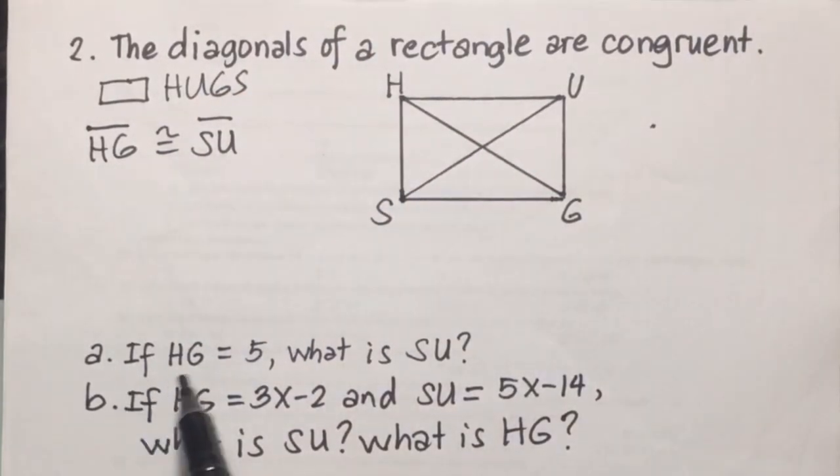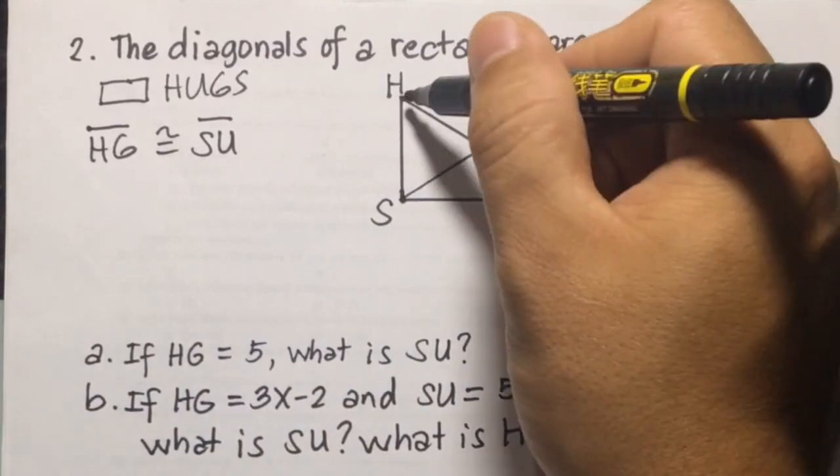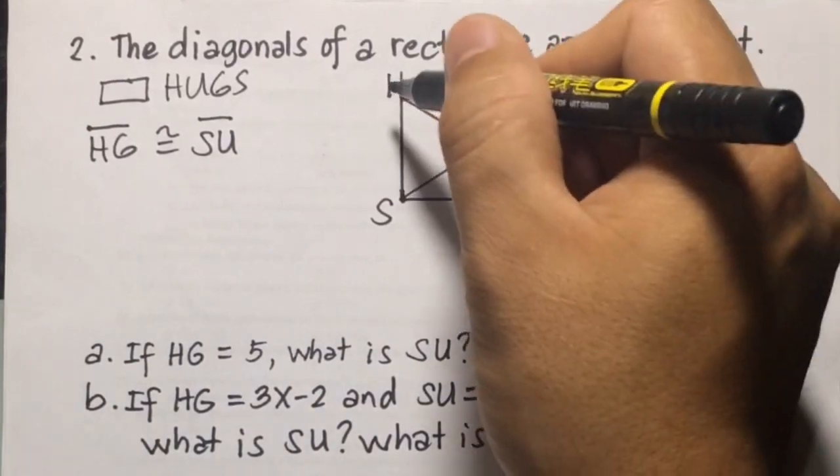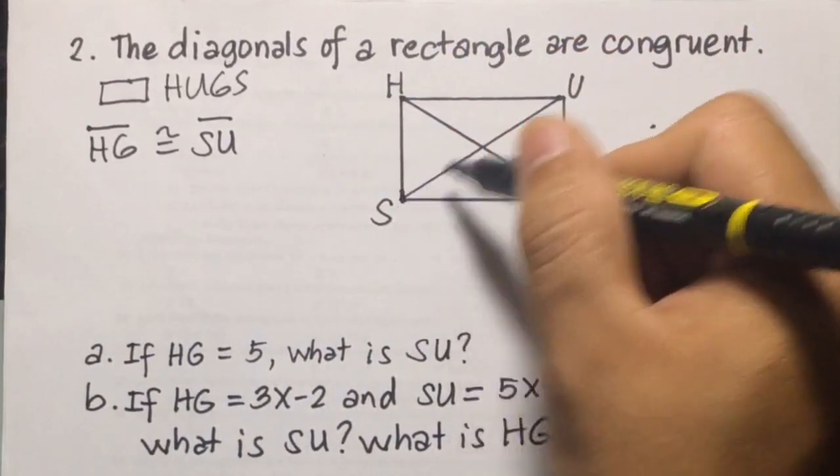Now, A. If HG equals 5, so if this is 5 here, what is SU? Since this is 5 here, we can say that SU is also 5.